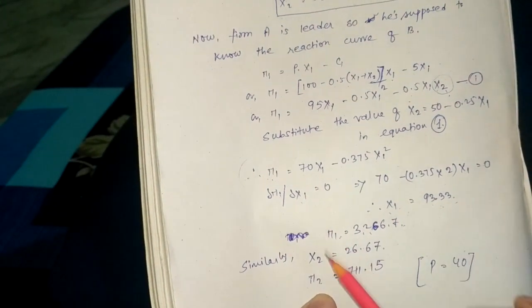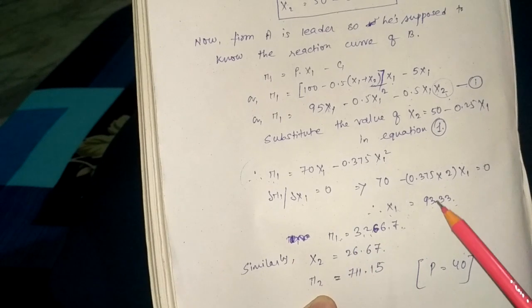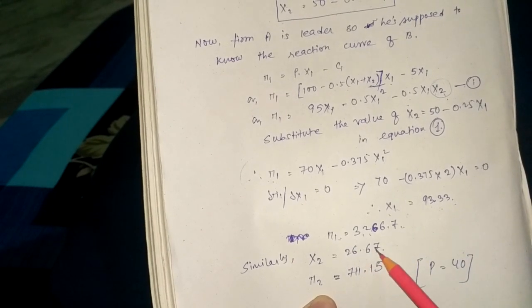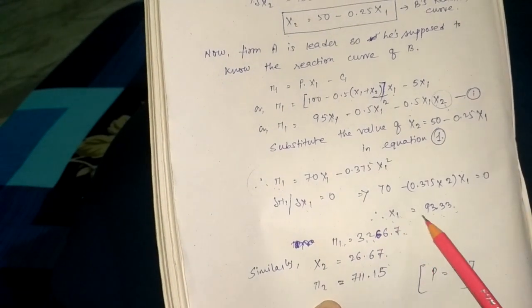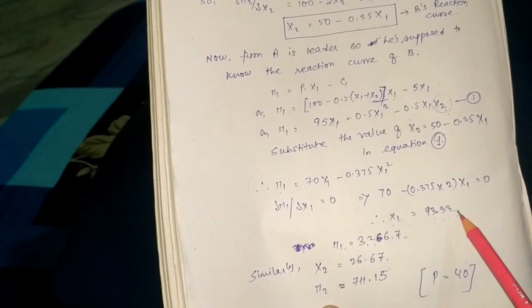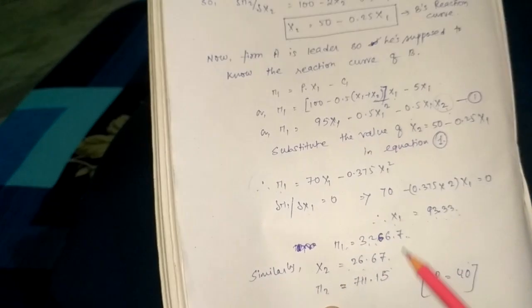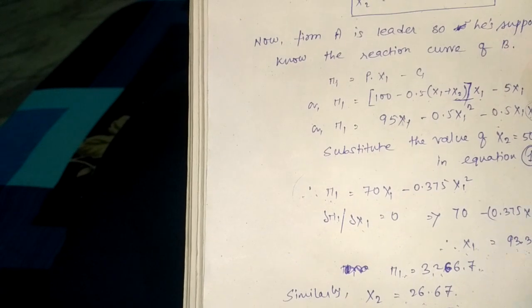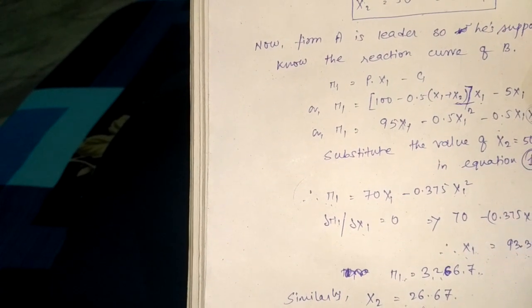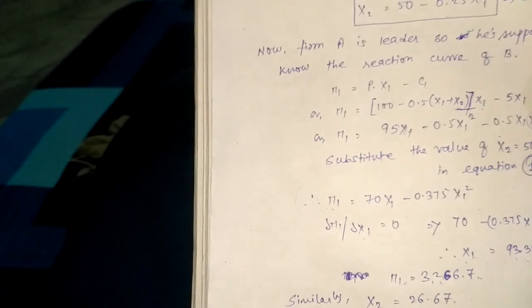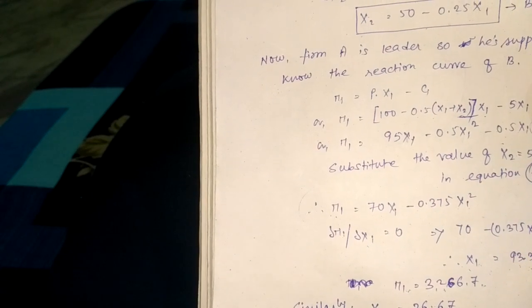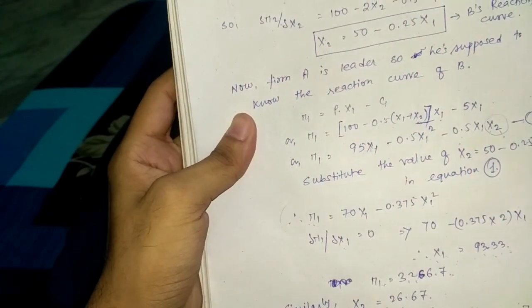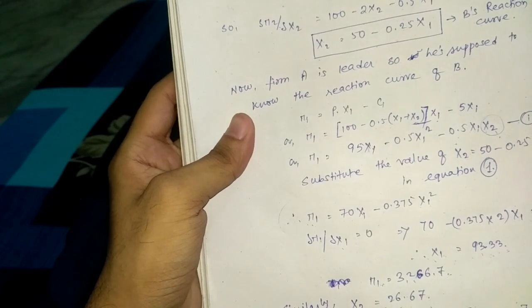Now let's compare it. The output and profit for firm 1 is greater than that of firm 2. For firm A, which is leader, the output is 93.33, and for follower it is 26.67, and similar for the profit factor. Hence we prove the statement that when firm A is leader and firm B is follower, then the output and profit of firm A should be greater than the output and profit of firm B. If you have any doubt, comment below and let me know. Thank you for watching.